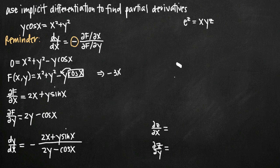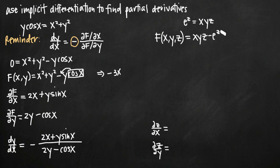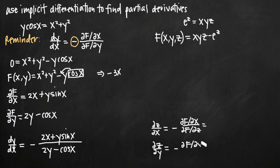We'll find these separately. First, we subtract e to the z from both sides to get capital F of x, y, z equals xyz minus e to the z, with zero on the left-hand side. The partial derivative of z with respect to x equals negative (partial F / partial x) over (partial F / partial z). Similarly, the partial derivative of z with respect to y equals negative (partial F / partial y) over (partial F / partial z).